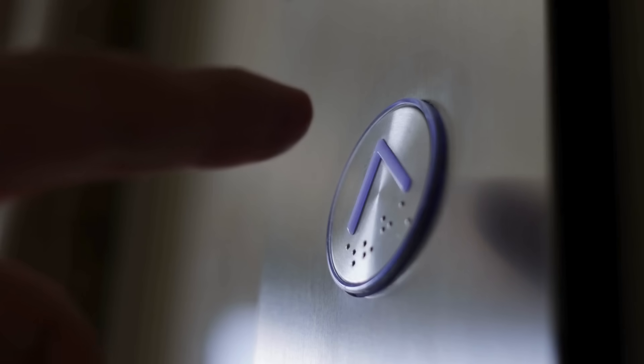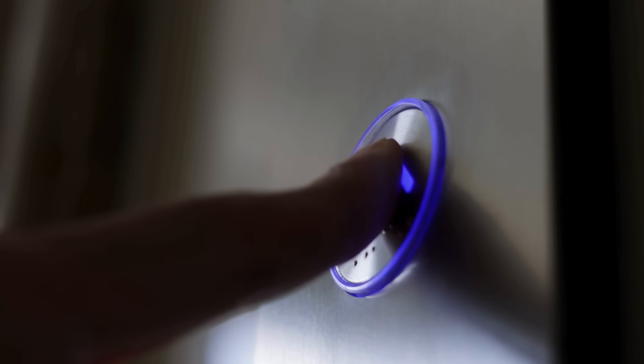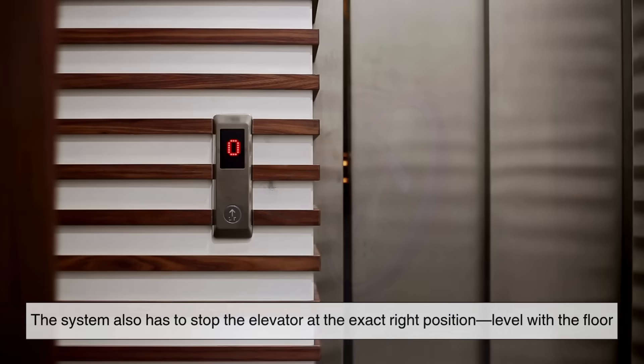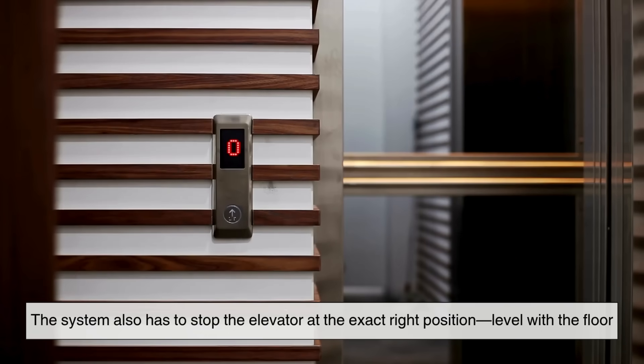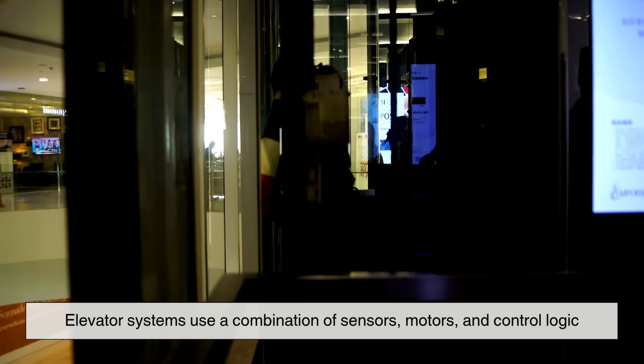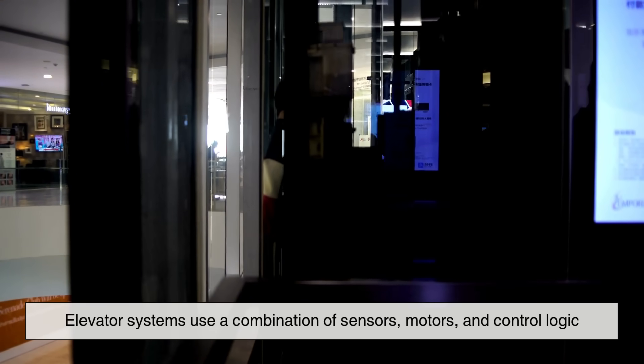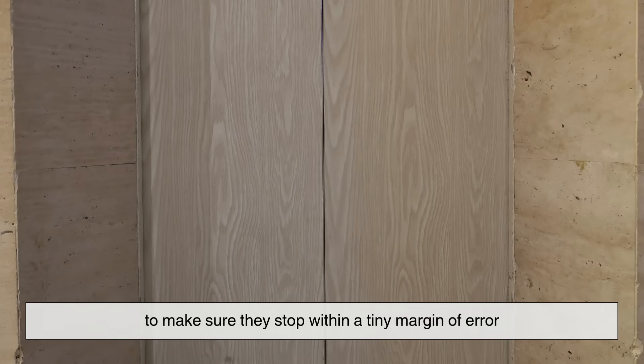But here's the real challenge. It's not just about moving up or down. The system also has to stop the elevator at the exact right position, level with the floor. And that's where things get impressive. Elevator systems use a combination of sensors, motors, and control logic to make sure they stop within a tiny margin of error.